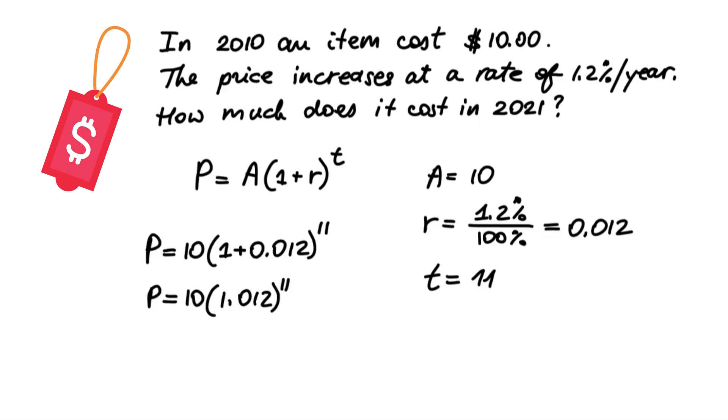Then, raise the bracket to the exponent and only then multiply by 10. P equals approximately $11.40. Therefore, the item costs $11.40 in 2021.